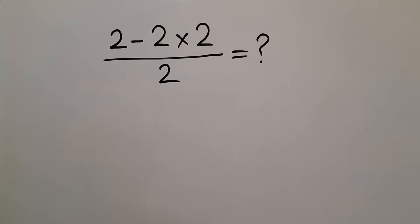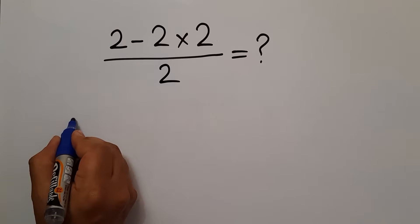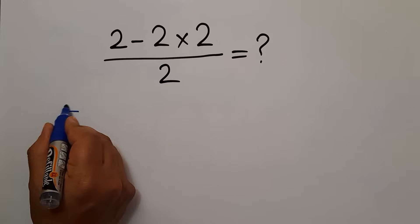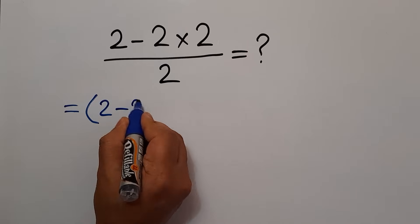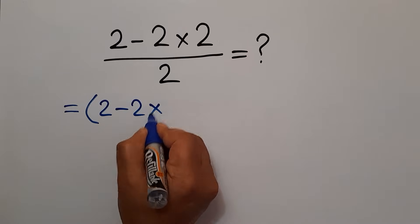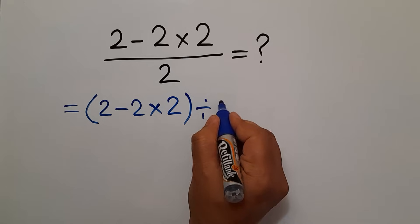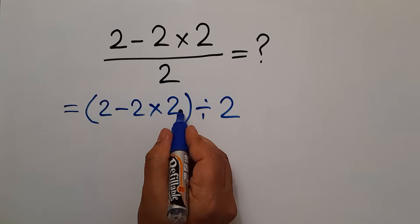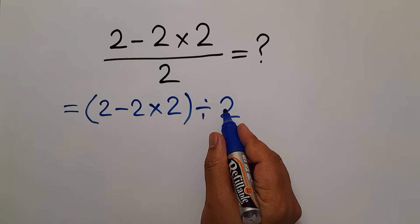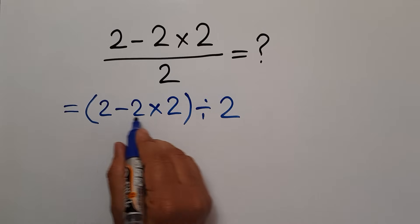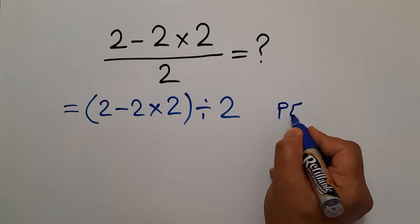No, that's not the correct path. The fraction can be written as (2 minus 2 times 2) divided by 2 — the numerator divided by the denominator. And here, according to the order of operations, which is PEMDAS,